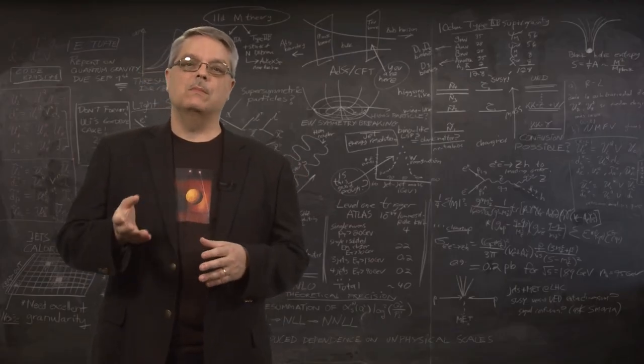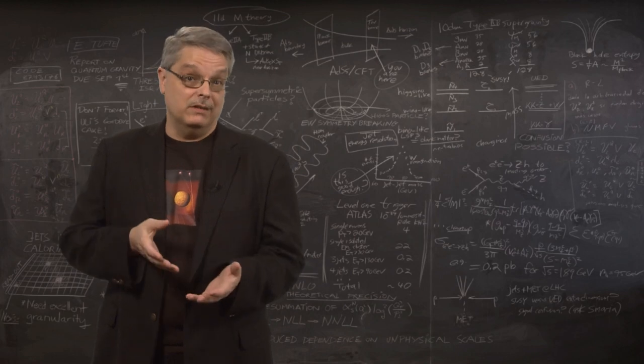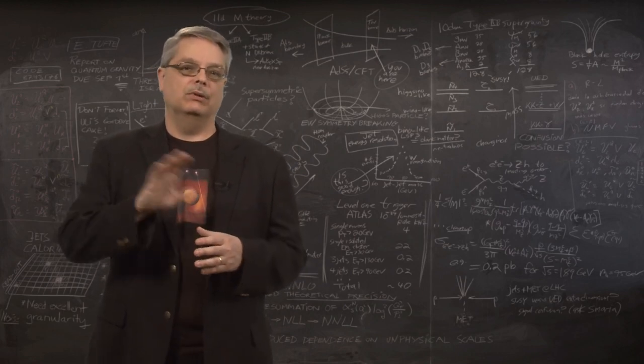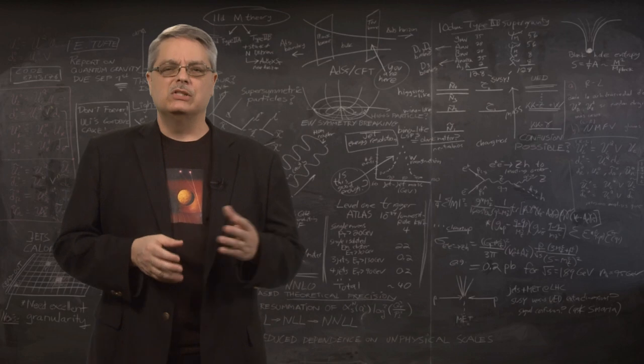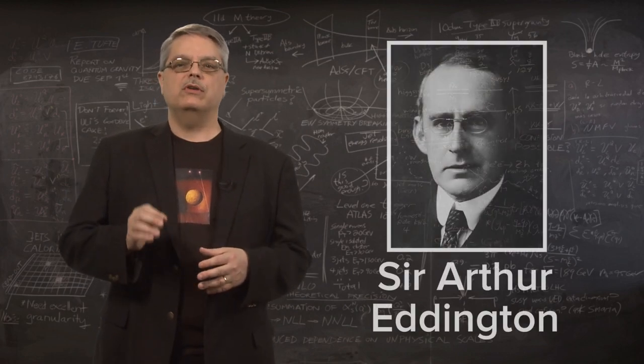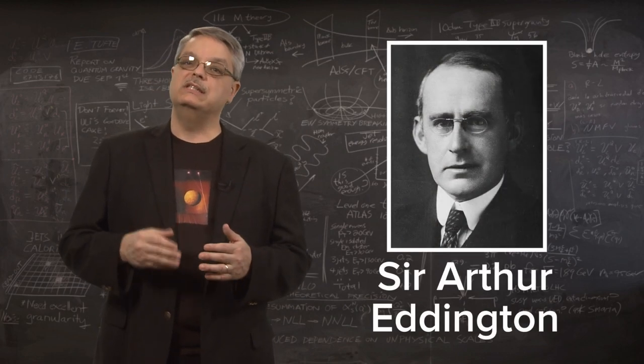The only problem is, the only nearby star that can curve space is the sun. And the sun is so bright that it blots out any stars behind it. So in 1919, Sir Arthur Eddington used an eclipse to see past the sun.